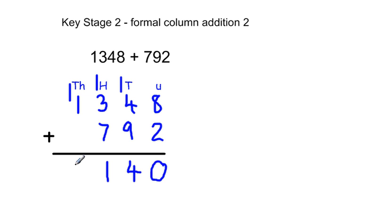So now we've got 1 plus 1, which equals 2. 1348 plus 792 equals 2140.